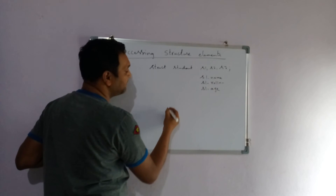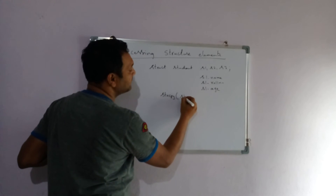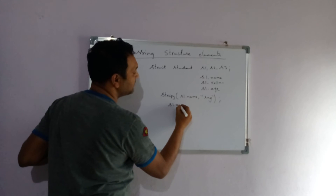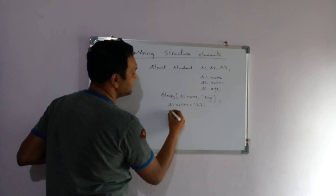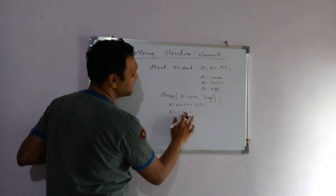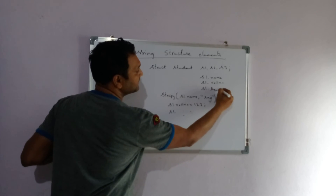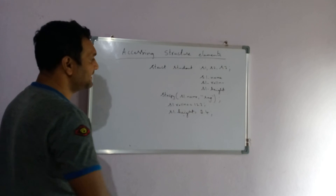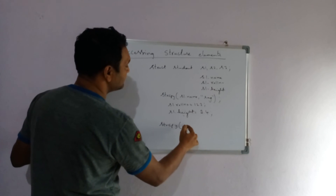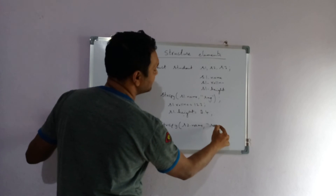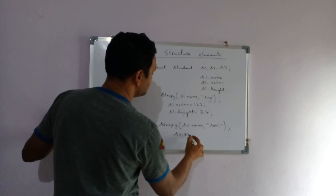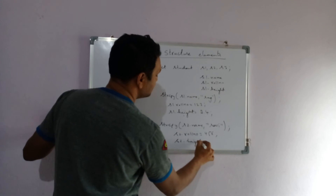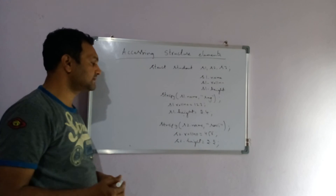Let us say you want to get the name, so we use scanf to scan and copy: s1.name. For the roll number: s1.number = 123. For the height: s1.height = 5.4 feet. This is how we access the structure members.